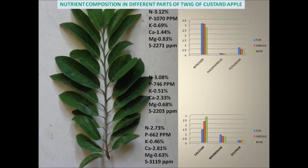An index leaf should be recently matured and physiologically active, which satisfies the major biochemical processes required for supporting the yield contributing characters with stable nutrient concentration. In order to identify the correct period, correct stage and correct leaf position for identifying the index leaf, a study was conducted at Central Horticultural Experiment Station, Vaisalpur, Godra, Gujarat in the semi-arid ecosystem.